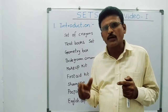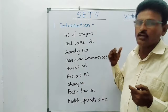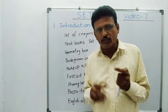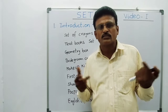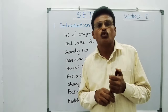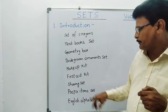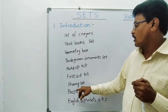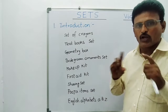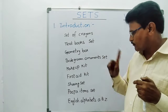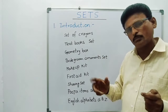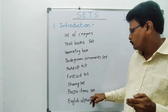Makeup kit — for makeup purposes, somebody will purchase a makeup kit. Also a first aid kit — first aid kit contains cotton, bandage cloth, scissors for cutting purpose, tincture, and also hydrogen peroxide H₂O₂ for cleaning purpose. All these they will keep in the first aid kit. That is also one kit. Similarly a shaving set, a puja item set — somebody will do Varalakshmi Vratapuja, and for that we go to a shop and ask for puja items, and immediately they will give us the complete puja item set.